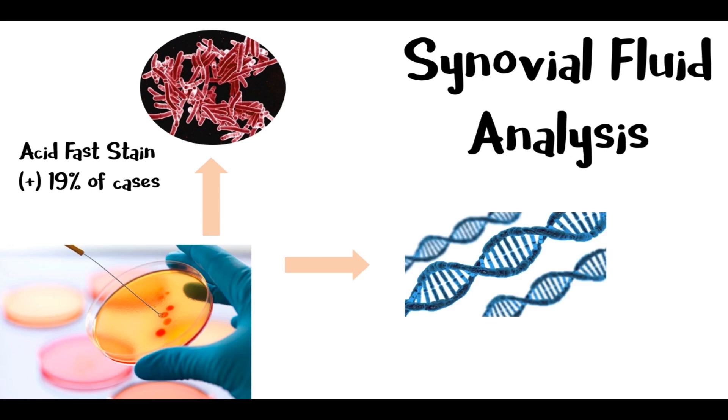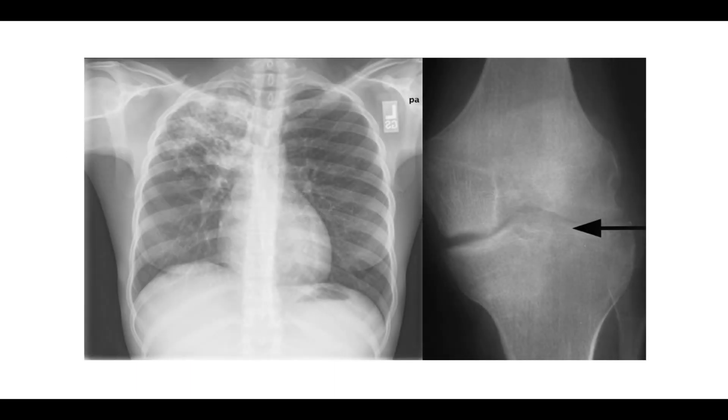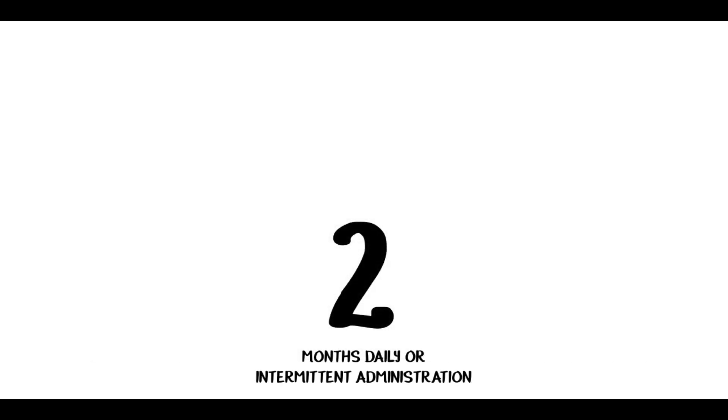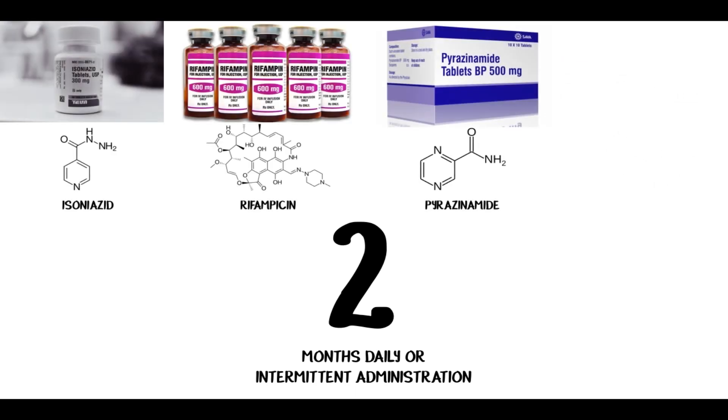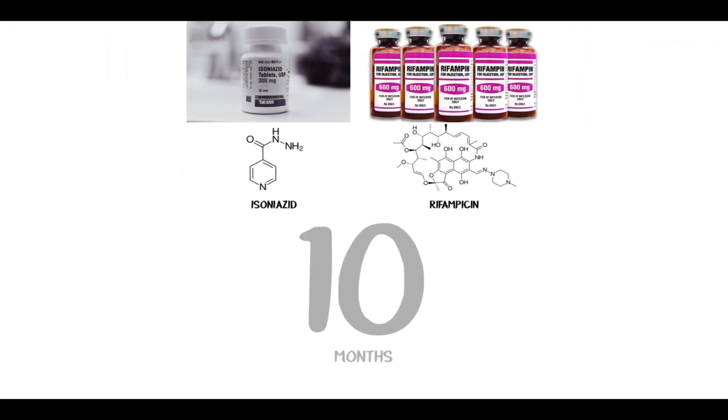A culture of Mycobacterium tuberculosis can also be done for PCR detection. The mainstay treatment for TB arthritis would be similar to pulmonary TB. The usual treatment regimen is 2 months daily or intermittent administration of isoniazid, rifampicin, pyrazinamide, and ethambutol, followed by isoniazid and rifampicin for the succeeding 10 months.